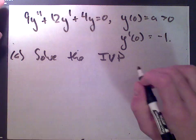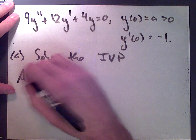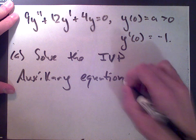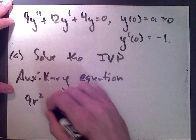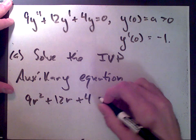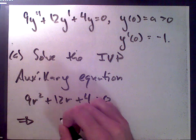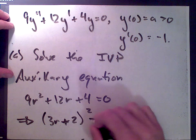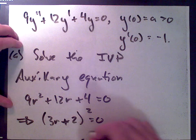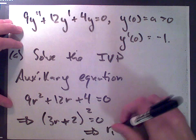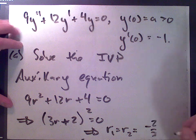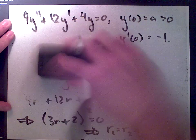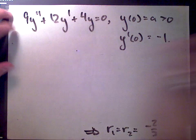We get the auxiliary equation: 9r² + 12r + 4 = 0. We factor this to get (3r + 2)² = 0 — you can confirm that for yourself. This gives us repeated roots r1 = r2 = -2/3.